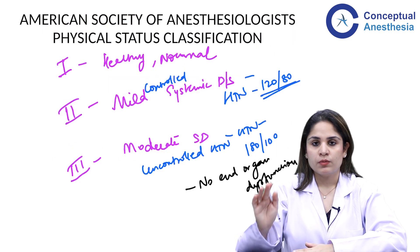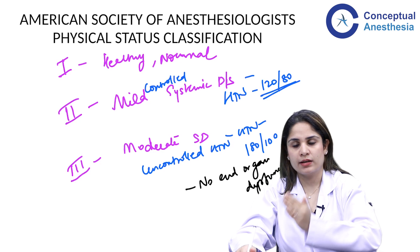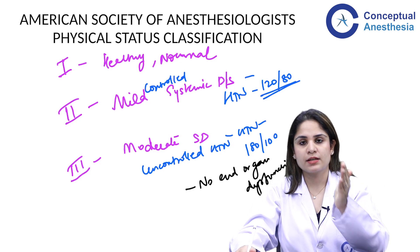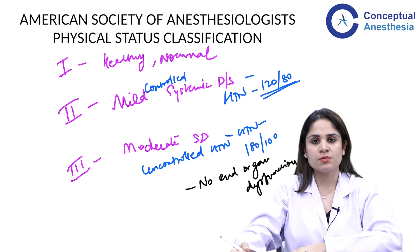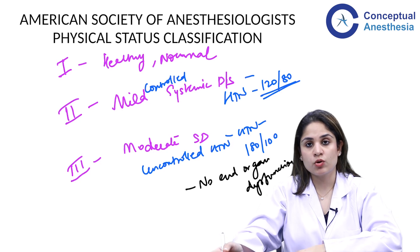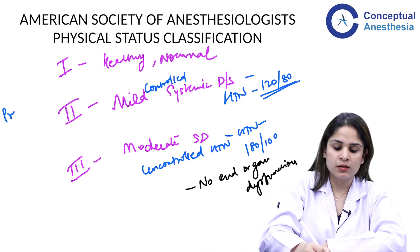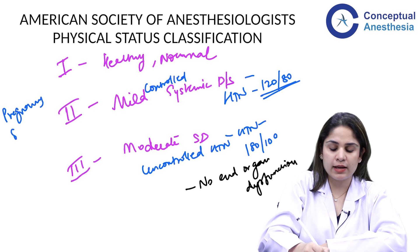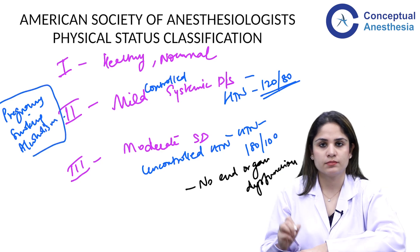Regarding ASA modifiers: if a patient is pregnant, a smoker, or an alcoholic, they are classified as ASA Physical Status 2, not ASA 1. Pregnancy, smoking, and alcoholism all place a patient in ASA Status 2.